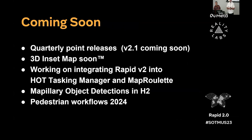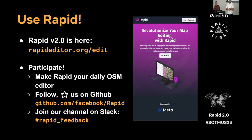So what's next very quickly: we're hoping to do quarterly point releases. We'll be releasing the 3D inset map you saw soon, probably within the next couple of weeks. At some point this half we'll release the other features we showed. We are actively working on integrations with both MapRoulette and Tasking Manager to get Rapid V2 into both of those apps. Hopefully in H2 we'll have the Mapillary object detections done as well. Use Rapid at rapideditor.org/edit — you can use it right now. If you have questions, come find us at the Meta booth upstairs.